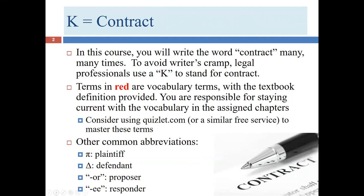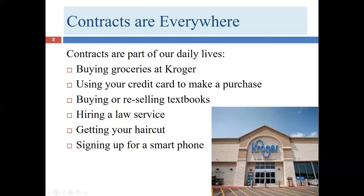There are also the -OR and -EE suffixes. Many legal words end in O-R or E-E. Once I've introduced a term — for example, promisor — I'll just write OR. And when I talk about the promisee, I'll just write EE. It's a way to save writer's cramp. Hopefully these abbreviations help, but if you like to write out the whole word, that works too.